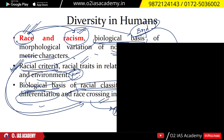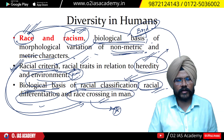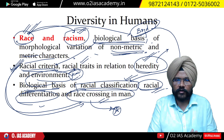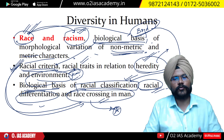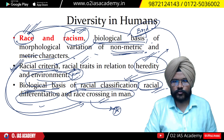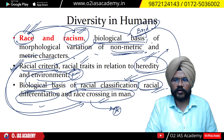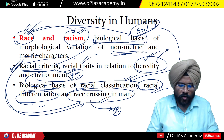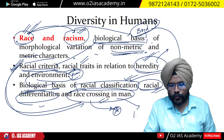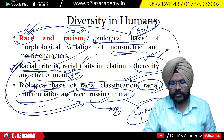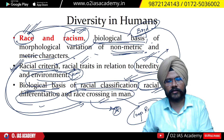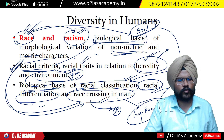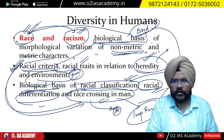Davenport conducted mulatto studies and explains how when different racial groups meet each other, a new gene pool develops and a new race emerges — new racial criteria are found. This is the concept of racial crossing. Davenport says that through racial crossing, composite races are formed. Hooton, in his classification, divides composite races into three parts. All of these things we study under diversity in humans.